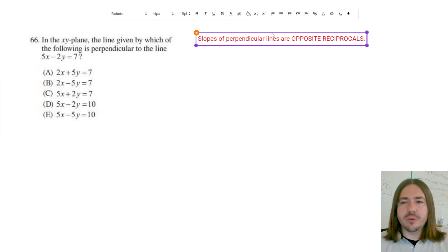So not only are they opposites, like one's positive, one's negative, but the slopes are also reciprocals of each other. So what we need to do is find the slope of the given equation and then figure out what the perpendicular slope would be and try to figure out which one of these has that perpendicular slope.